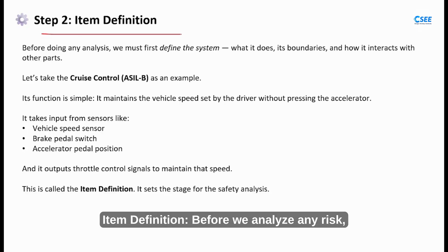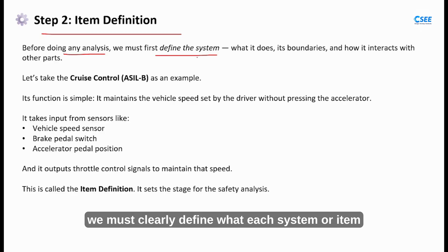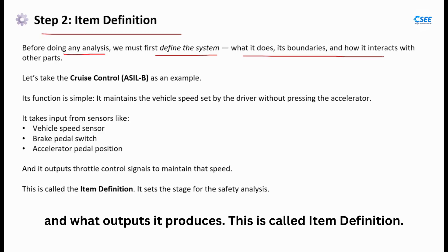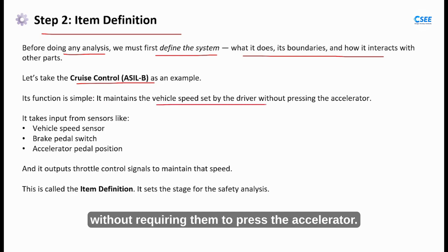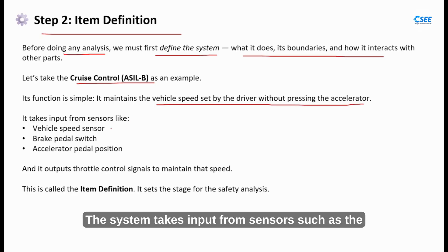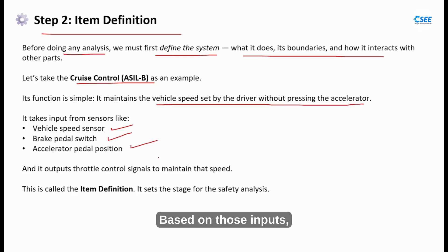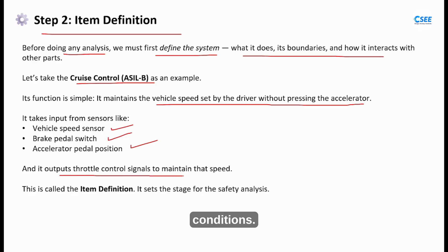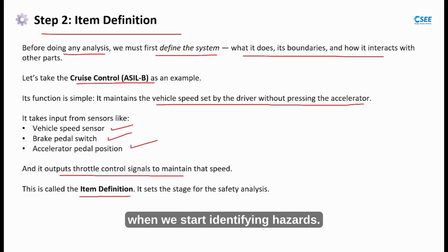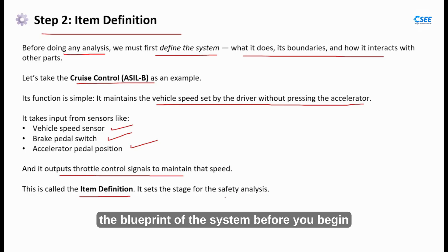Step 2: Item Definition. Before we analyze any risk, we must clearly define what each system or item actually does, what inputs it uses and what outputs it produces. This is called item definition. Let's take the cruise control system as an example. Its main purpose is to maintain a constant vehicle speed set by the driver without requiring them to press the accelerator. The system takes input from sensors such as the vehicle speed sensor, the brake pedal switch and the accelerator pedal position. Based on those inputs, it sends commands to the engine control unit to adjust throttle levels. It operates primarily during highway driving conditions. This process of defining the item's purpose, interfaces and environmental context helps us later when we start identifying hazards.